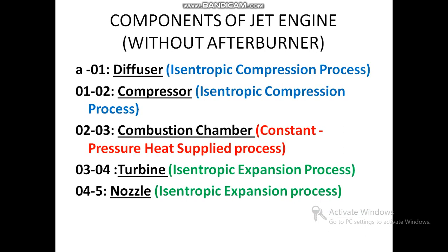The maximum amount of compression and pressure increase occurs in the compressor, so it comes under the isentropic compression process. The next device is called the combustion chamber. The combustion chamber is a device used to burn the air as well as fuel with respect to the air-to-fuel ratio or the stoichiometric ratio.